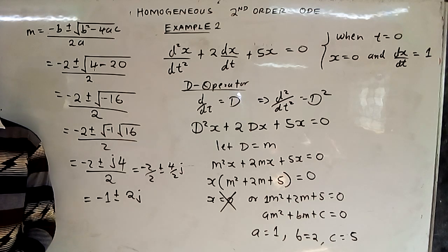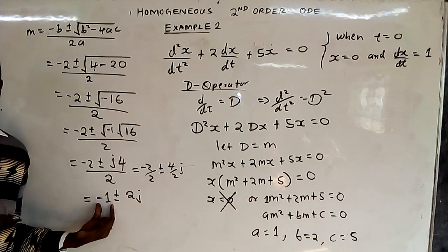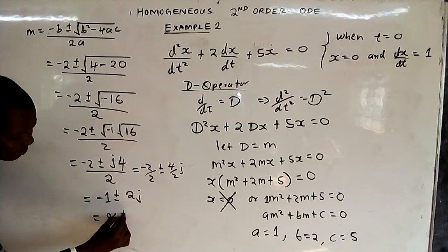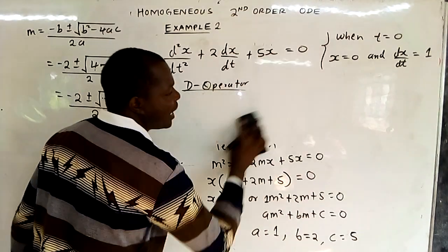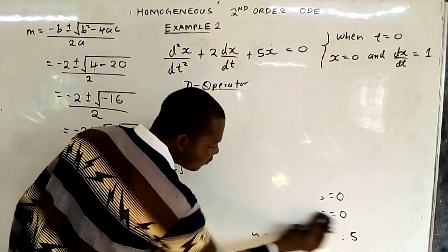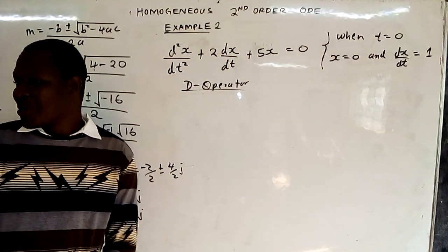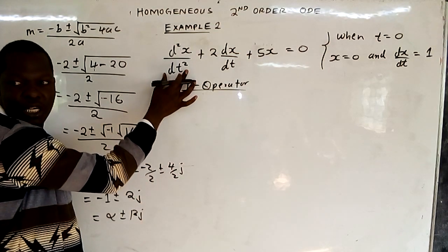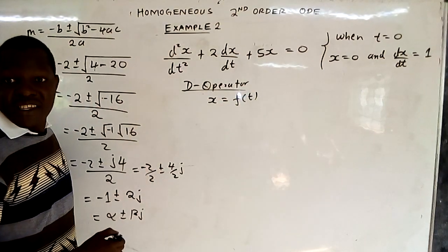This is in the form alpha plus or minus beta j. The solution of a homogeneous second order ODE with complex roots: the real part goes with the exponential function, and the imaginary part goes with the trigonometric functions. Since we are differentiating x with respect to t, x is a function of t.